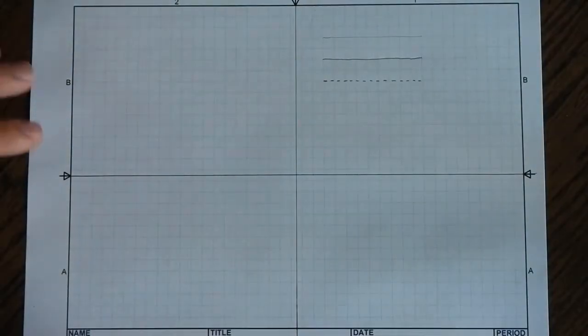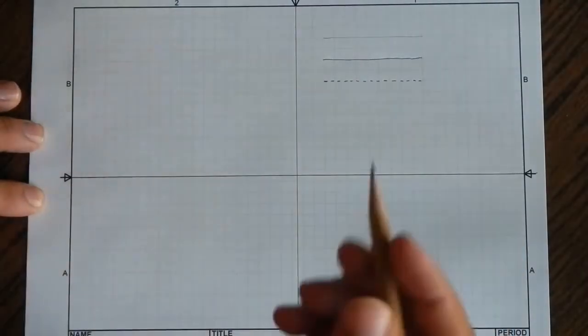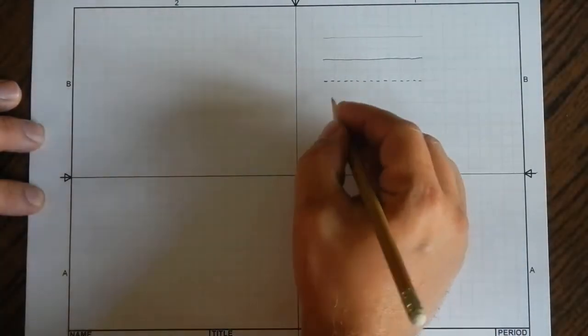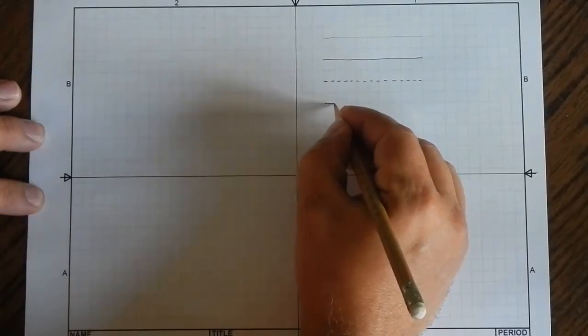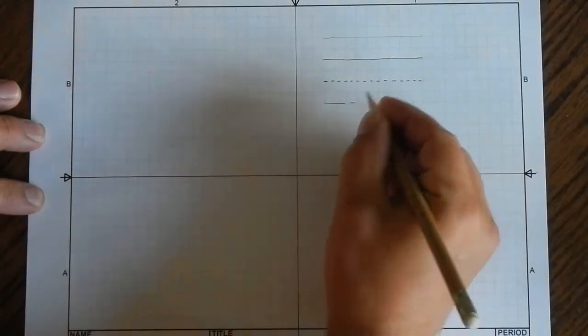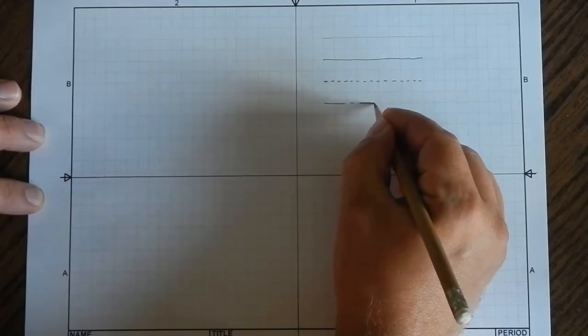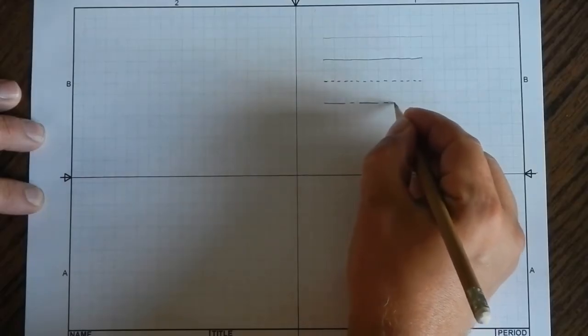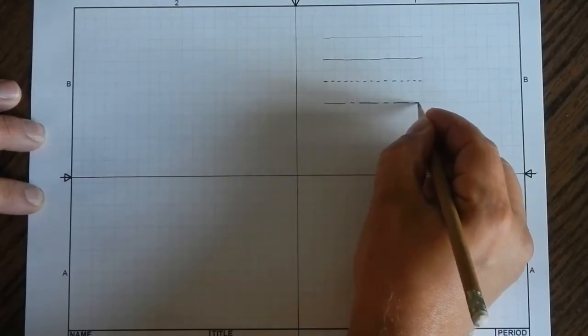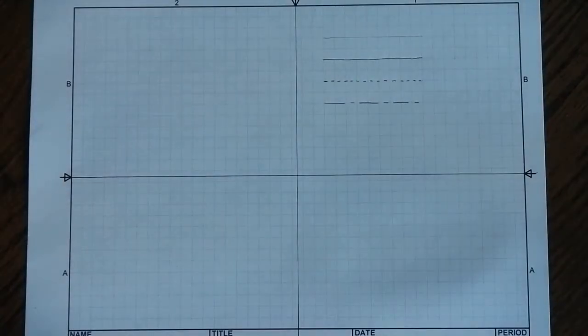The fourth type of line is a center line. This one's a little odd because I'm going to draw in a series of long and short, alternating each one as I go along. Center lines are used to mark openings, circles for example, that would be in a sketch.